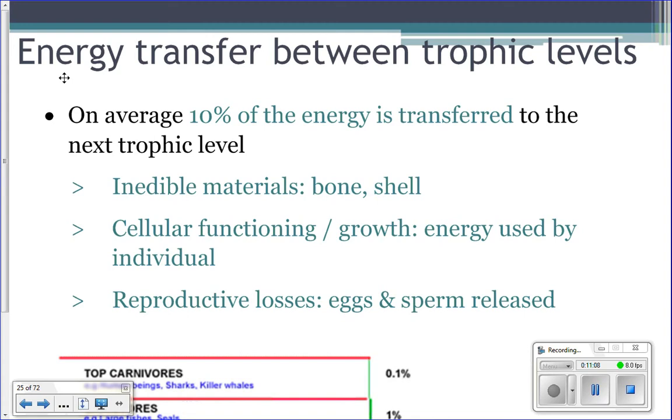Number one is inedible materials. So when you eat a clam, you eat the soft body of the clam. But you still have the shell of the clam. The clam put a lot of energy from the food that it ate into making that shell. However, you can't eat the shell and digest the shell and get the energy from that shell. So when you eat that clam, that energy that's stored in that shell is lost to you. So inedible materials like bones and shells and stuff, the energy that's in there, you can't get. So that gets lost.